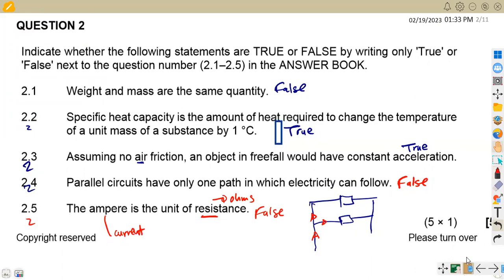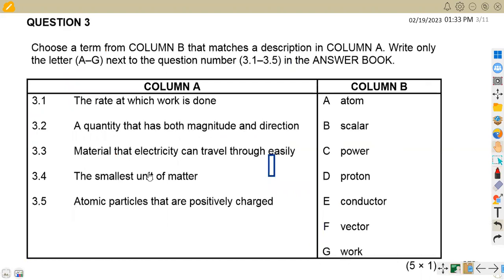On Question 3, we are given to choose a term from column B that makes the description in column A. Write only the letter A to G. Let's start with 3.1 - the rate at which work is done. What is that? The rate at which work is done - we have this as power. This is the definition for power, and we had that definition before. So our answer is C for power. 3.2, a quantity that has both magnitude and direction - we talked about this from Question 1. This is a vector quantity, and a vector is on F. The answer here is F.